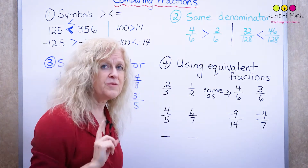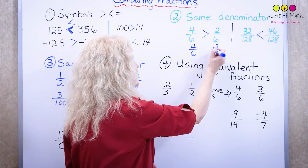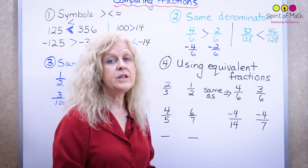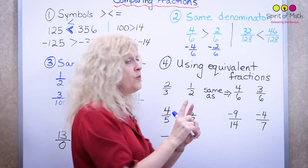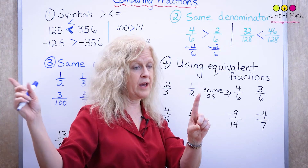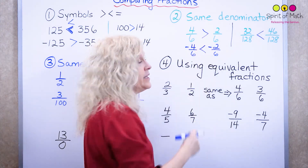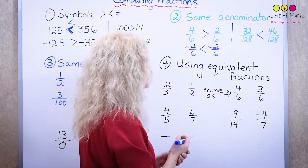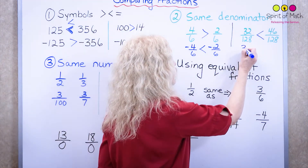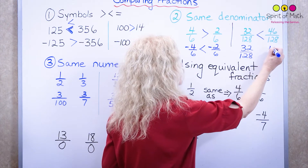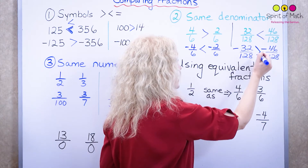Now let's make it a bit more tricky. Going back to four-sixths versus two-sixths, this time I'm going to put a negative on both. Think about which one is further to the left on a number line. Negative four-sixths is further left than negative two-sixths. If it's further to the left, it's smaller. So negative four-sixths is less than negative two-sixths — the signs change. A good strategy is to figure it out without the sign first, then put the negatives in and switch it around.